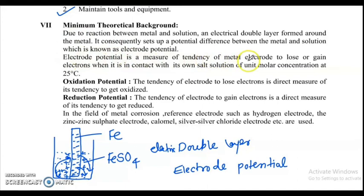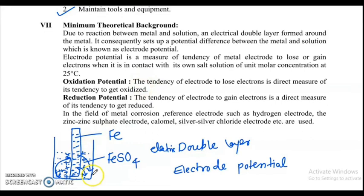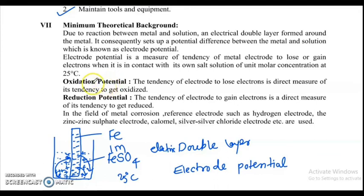Electrode potential is the measure of the tendency of a metal electrode to lose or gain electrons when it is in contact with its own salt solution of unit molar concentration at 25°C. There are two types of electrode potential: one is oxidation electrode potential and the other is reduction electrode potential.